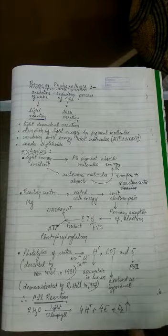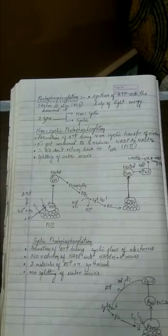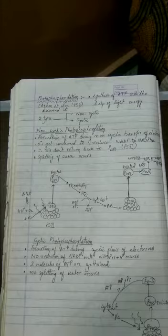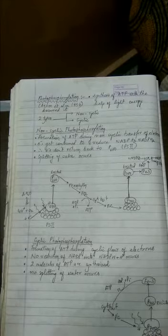Now the next thing to understand is photophosphorylation. What is photophosphorylation? Synthesis of ATP with the help of light energy. This is the simplest definition. Actually what exactly happens is ADP joins with one inorganic phosphate. I stands for inorganic, P stands for phosphate.